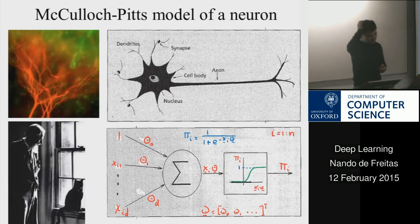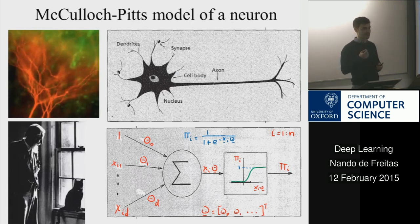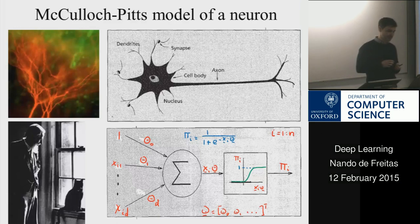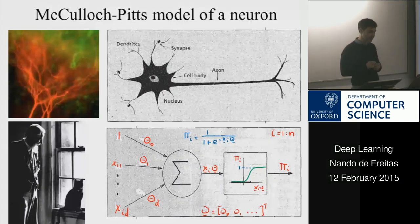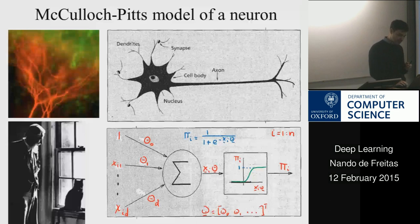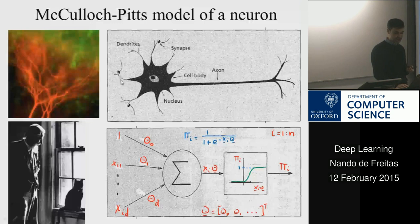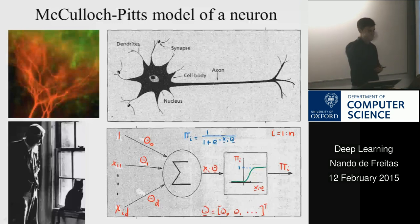From a biological perspective, logistic regression is inspired by a very simple model of a cell called the McCulloch-Pitts model. In this simplistic view, a cell has some synapses. Other cells pass information to this cell via the synapses through action potentials, and then the cell eventually fires some action potentials along the axon to the next cell.